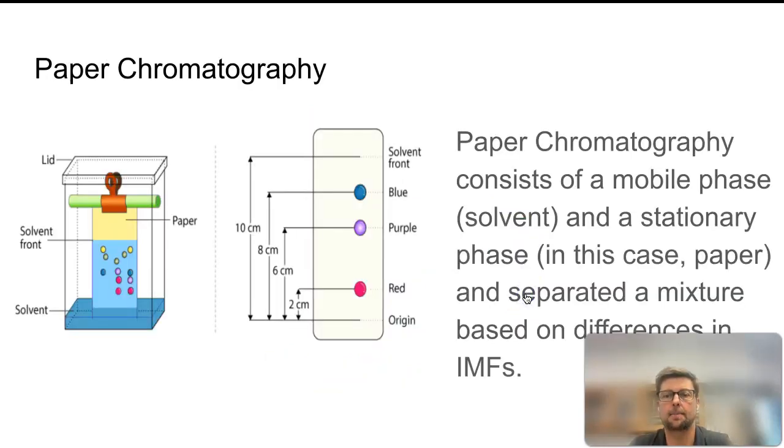The last type of separation of mixtures I want to review is called chromatography. This one that we use sometimes is called paper chromatography, but there are a lot of other ones. There's thin layer chromatography, column chromatography, high performance liquid chromatography, lots of ways to separate very small amounts of compounds.